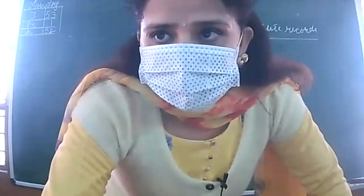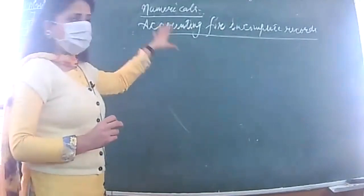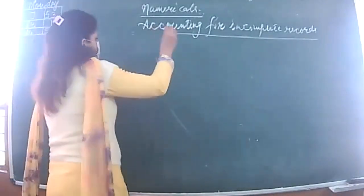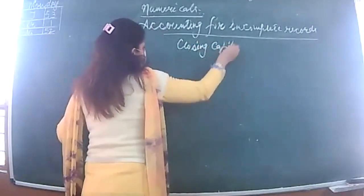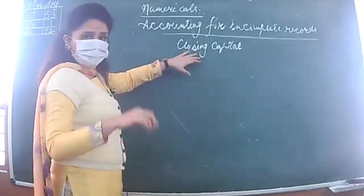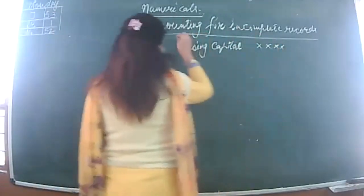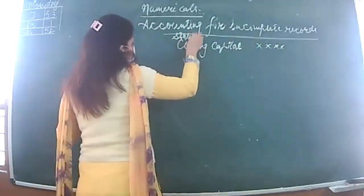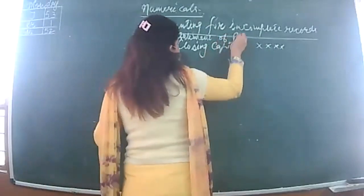Let's begin. Before I proceed to the numerical portion, I just want to recall the concept of what this chapter is about. With the help of a closing statement of affairs, we were calculating closing capital, and with that you will be preparing your statement of profit or loss. So basically, this chapter is about the statement of profit or loss.